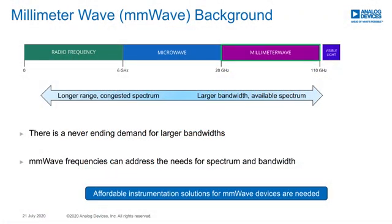Millimeter wave frequencies, which are from about 20 gigahertz to 110 gigahertz, are becoming increasingly popular because of the never-ending demand for higher bandwidths. Much larger bandwidths are available at millimeter wave frequencies. With the advances in semiconductor technologies, millimeter wave frequency devices are becoming increasingly more available. However, test and measurement instrumentation for millimeter wave devices can be very complex. Affordable instrumentation solutions are needed to address the test and measurement needs of millimeter wave equipment.